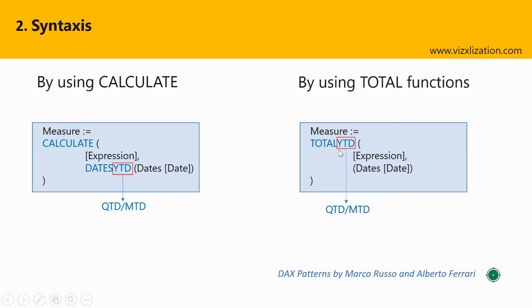The total function syntax is quite straightforward as well. We have TOTALYTD, and we can change the last piece to quarter-to-date or month-to-date. We provide the expression and also the column that belongs to the calendar table. That's how it works. Are you ready for the case? Let's do it.